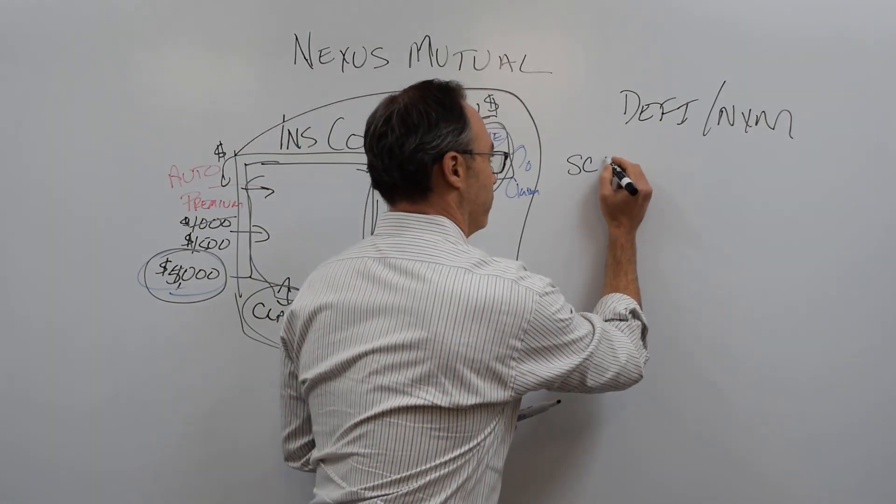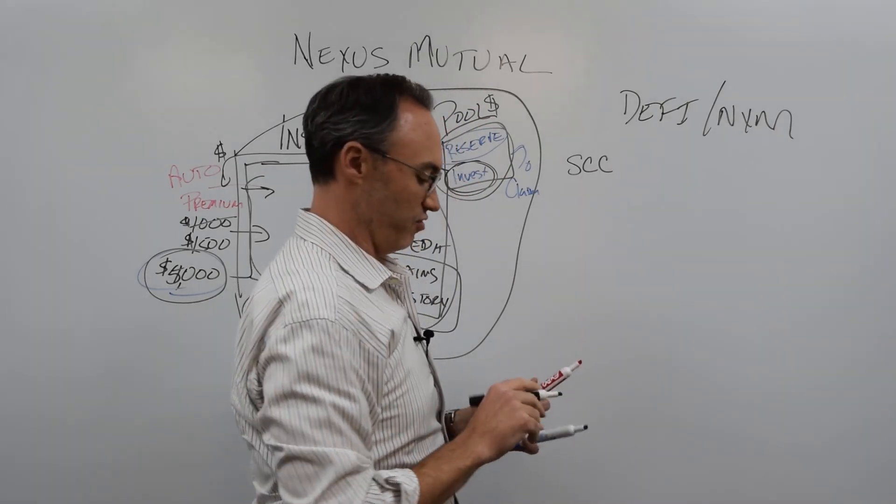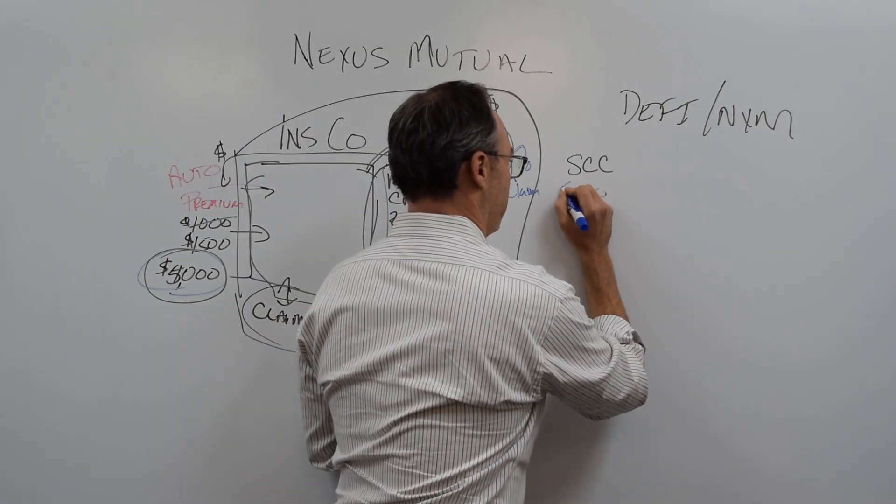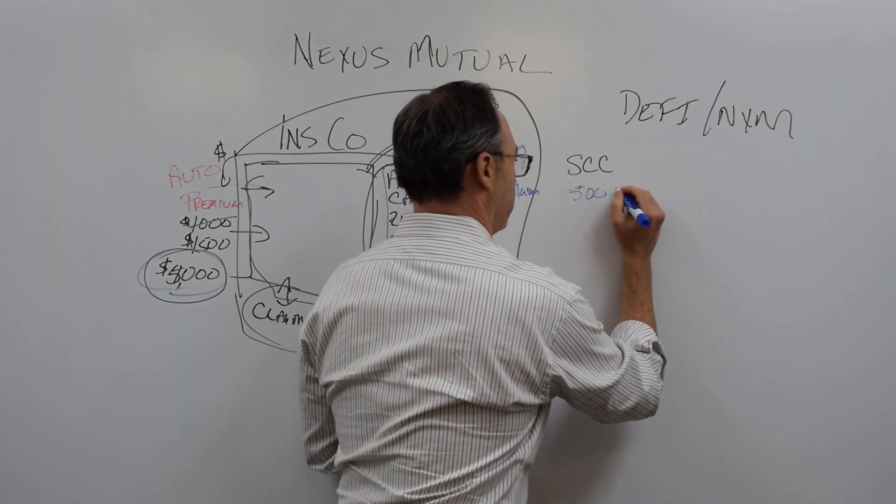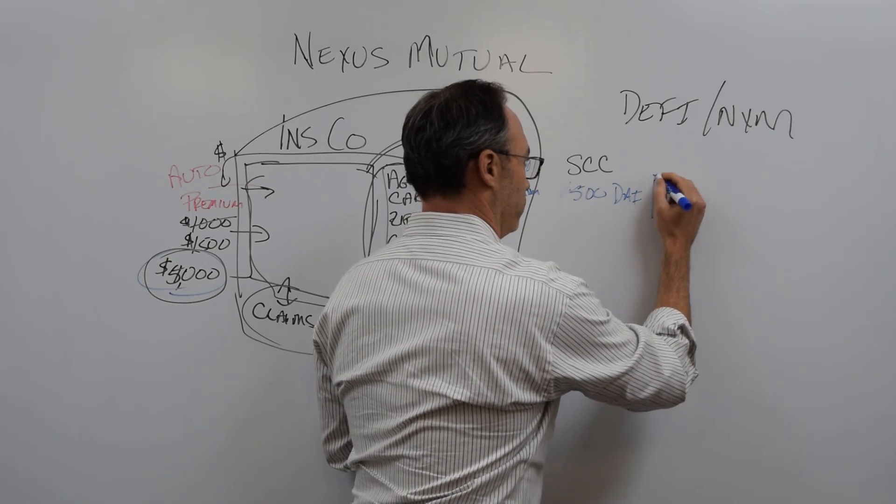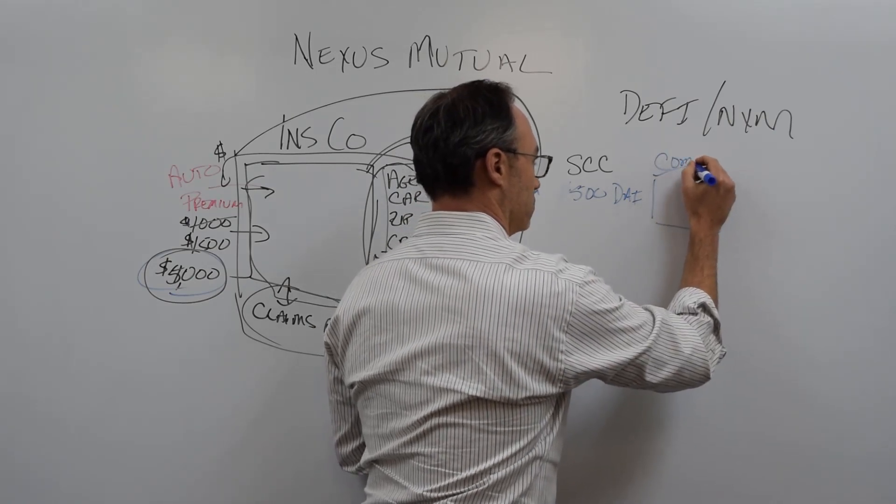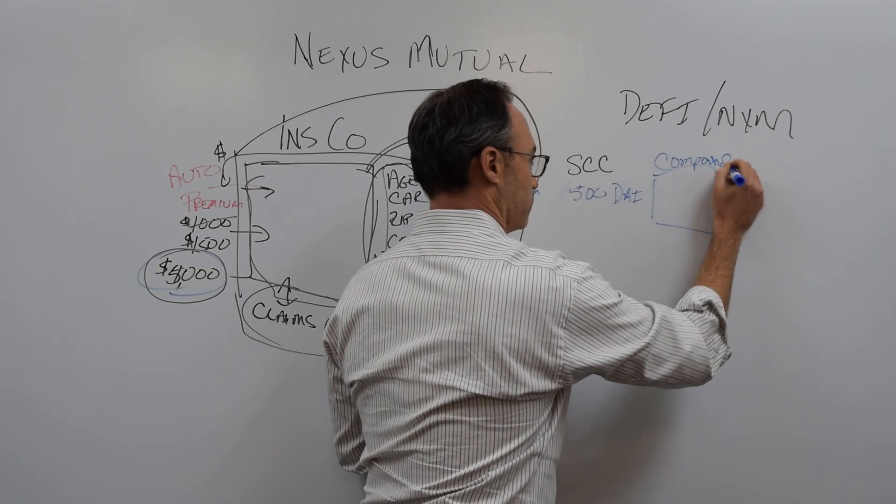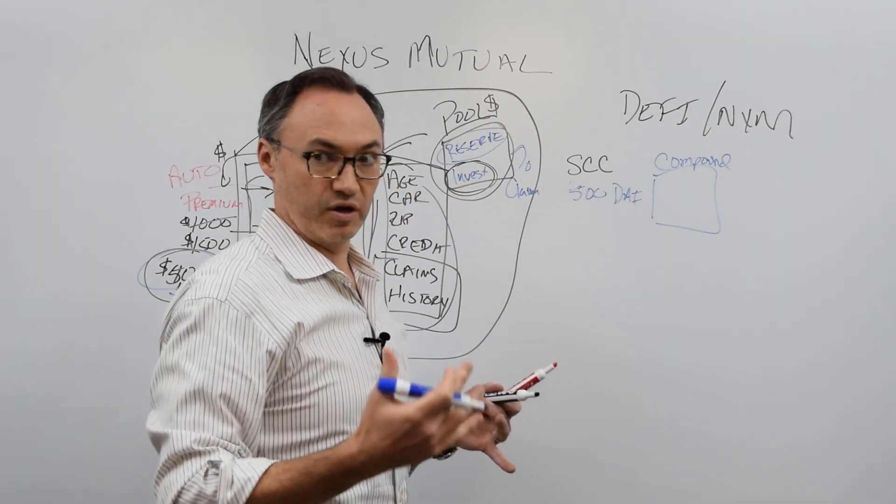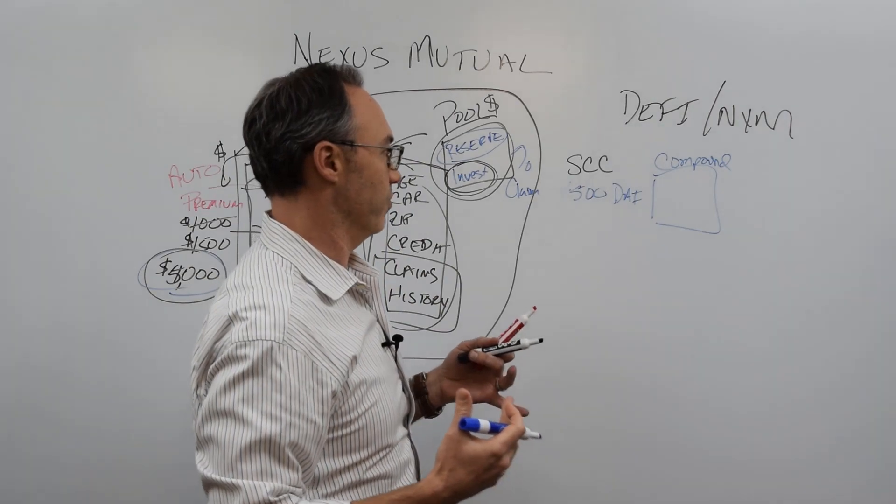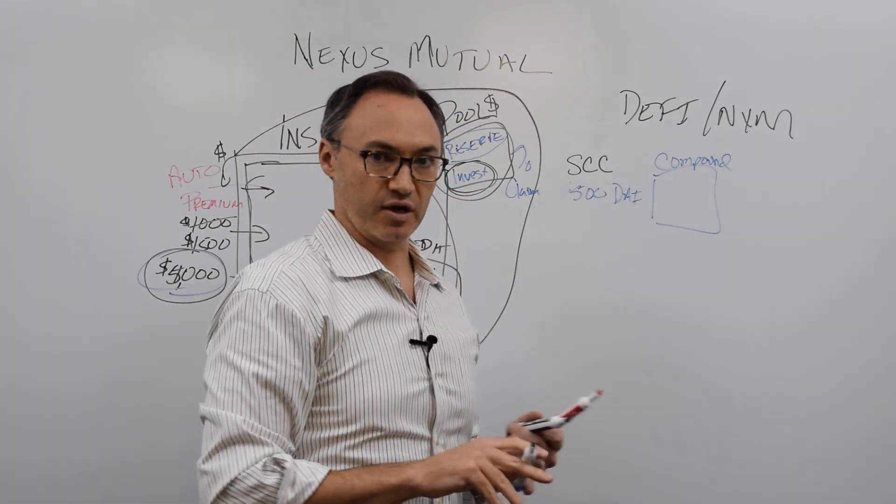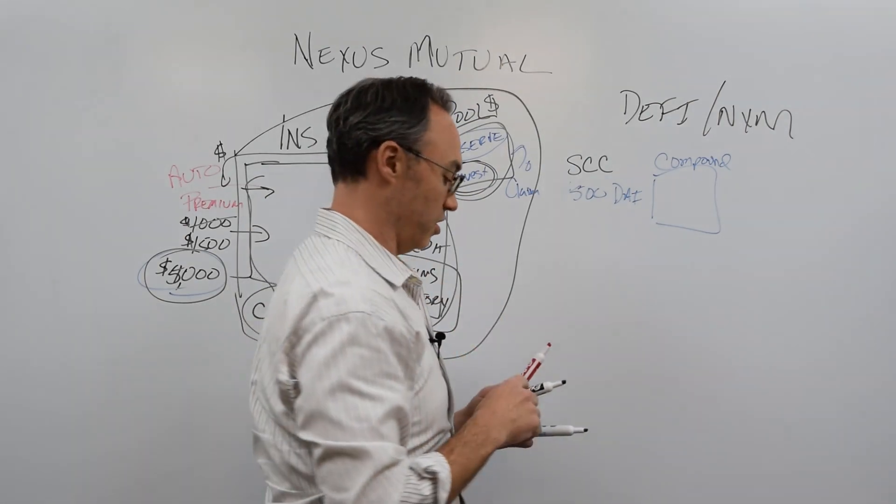So they have this smart contract coverage. So if I have a loan, for instance, we'll call it a 500 DAI loan into the compound pool, right? Now, as I talked earlier from a video about risk, my risk here is compound is a smart contract, right? The compound lending pool is a smart contract.